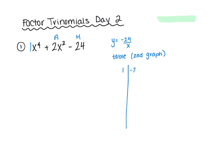Okay, so you should have gotten 1 and negative 24, 2 and negative 12, 3 and negative 8, and 4 and negative 6. Now, you could have gone up in the chart because a positive times a negative is a negative, so you also have to account for negative 1 and positive 24, negative 2 and positive 12, negative 3 and positive 8, and negative 4 and positive 6. On this list, which pair of numbers is going to add to 2?